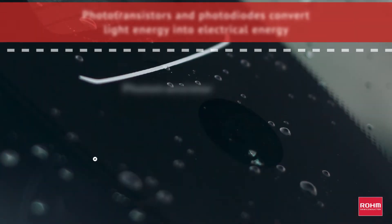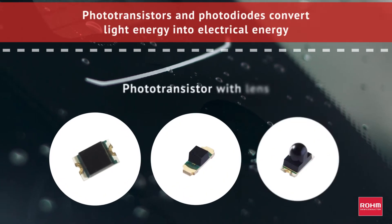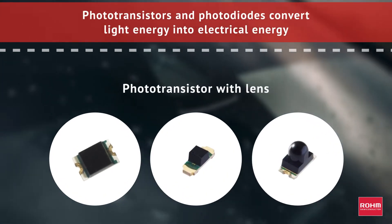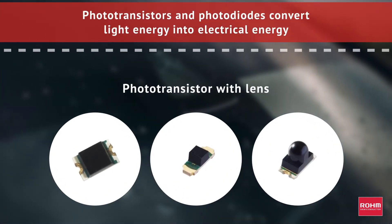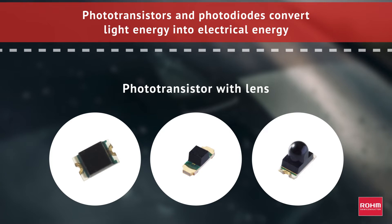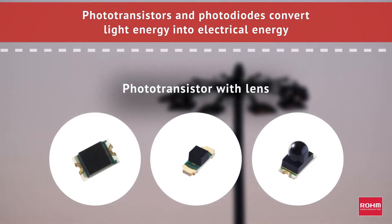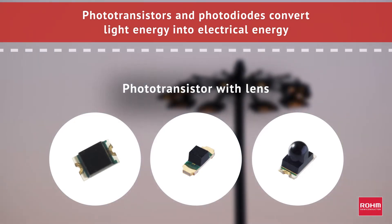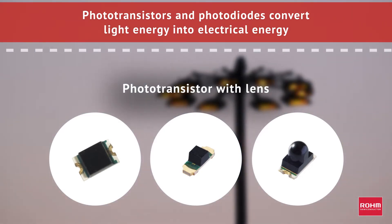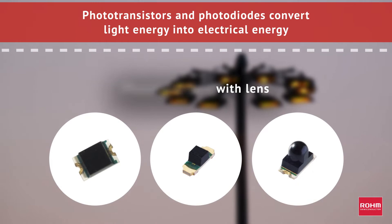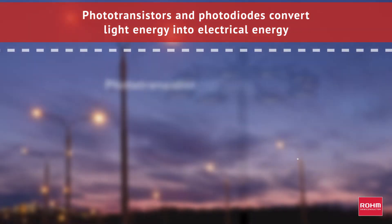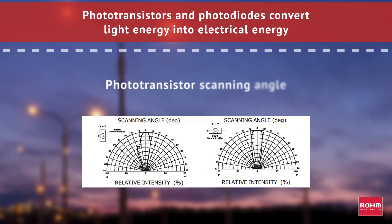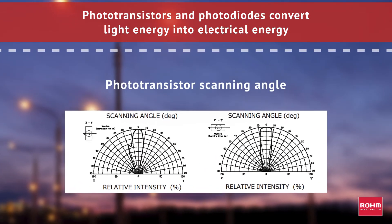Roam photo transistors and photo diodes efficiently convert light energy into electrical energy, making them ideal for light-level detection. The photo transistors are also offered in either through-hole or surface mount packages with a lens to provide high sensitivity within the scanning angle.